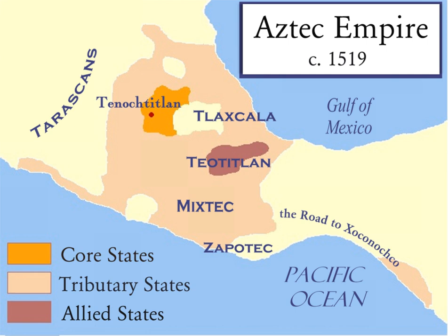In 1788, the states ratified the United States Constitution, going from a confederation to a union, and in 1789 elected George Washington as the first president of the United States.